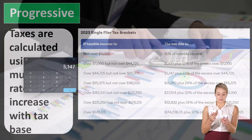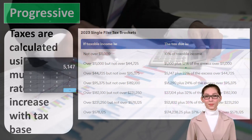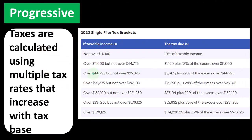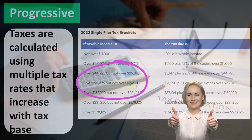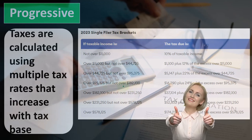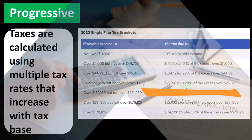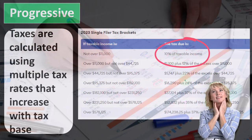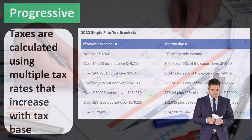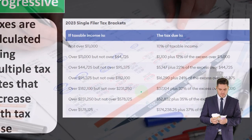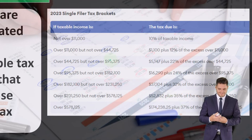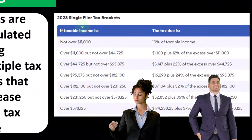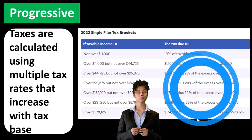If income is over $95,375 but not over $182,100, the top rate becomes 24% on the excess, with prior layers still taxed at 22%, 12%, and 10% respectively. You're applying three or four different tax rates to a single income. As income goes up you are subject to higher rates, up to 37%. Note also this is for a single filer — the tables change for married versus single filers.